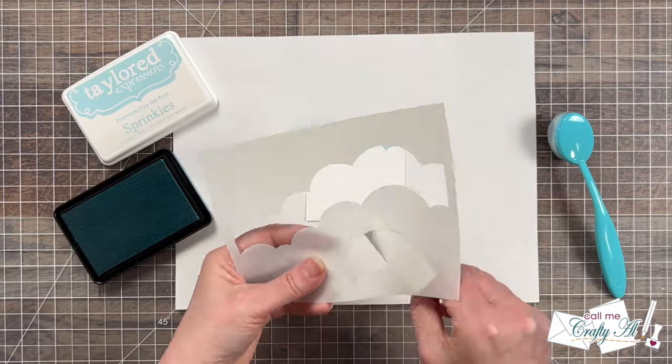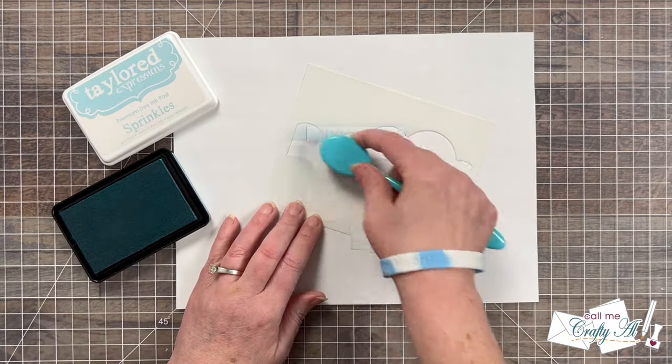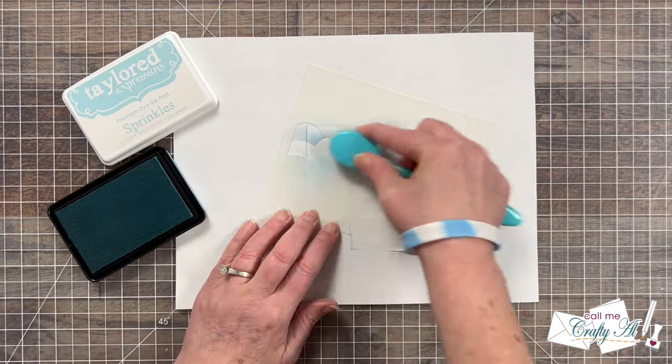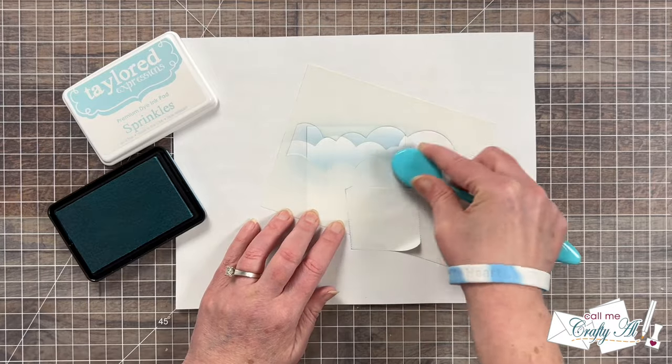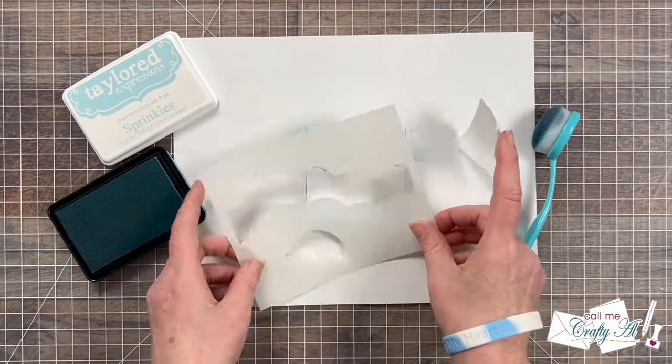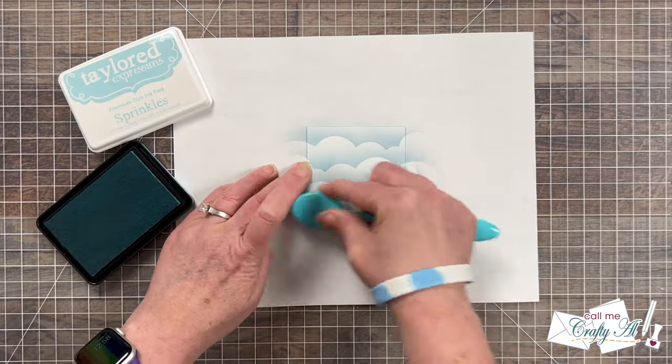Now because it also has other openings I did cover that up with some removable tape, and then working from the top to the bottom and flipping and moving the stencil back and forth I created a nice cloudy sky.